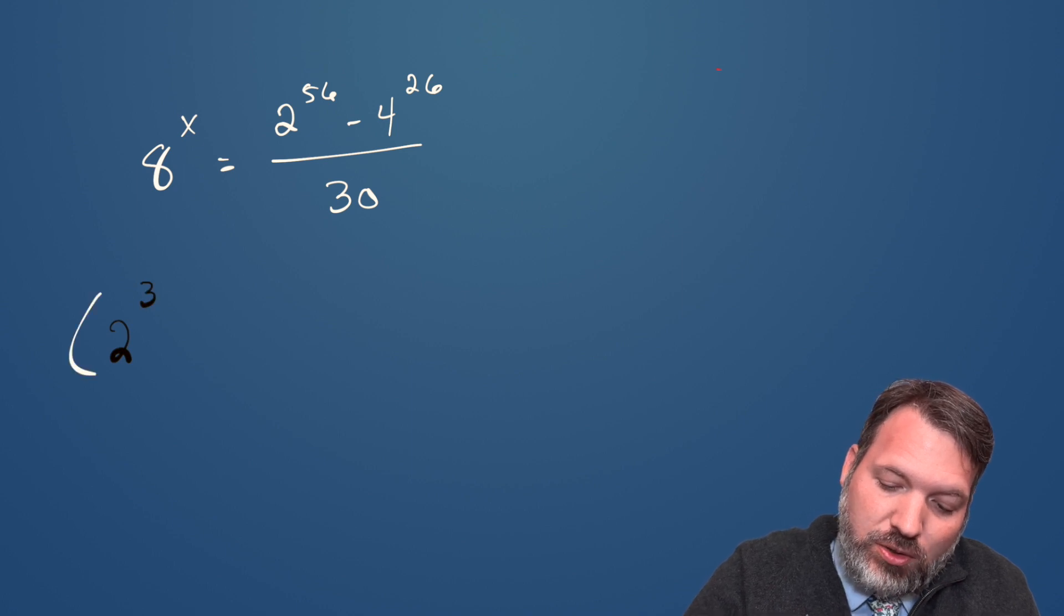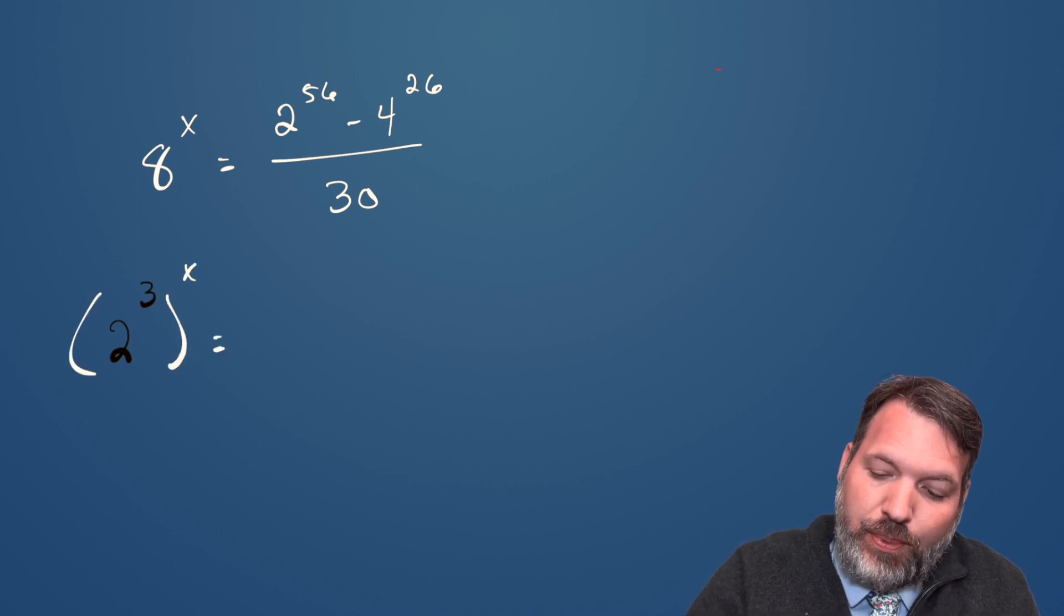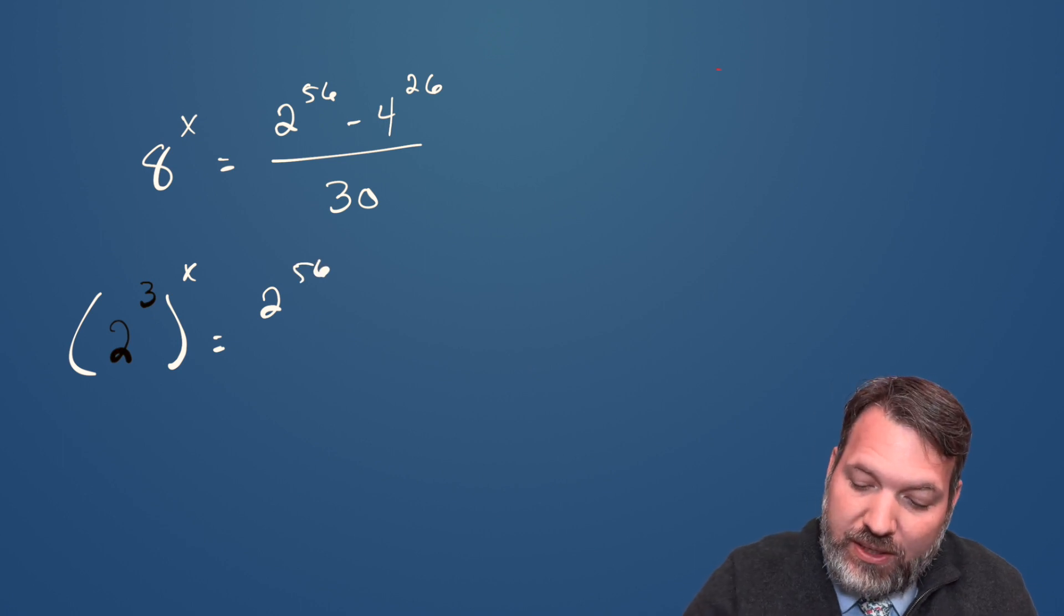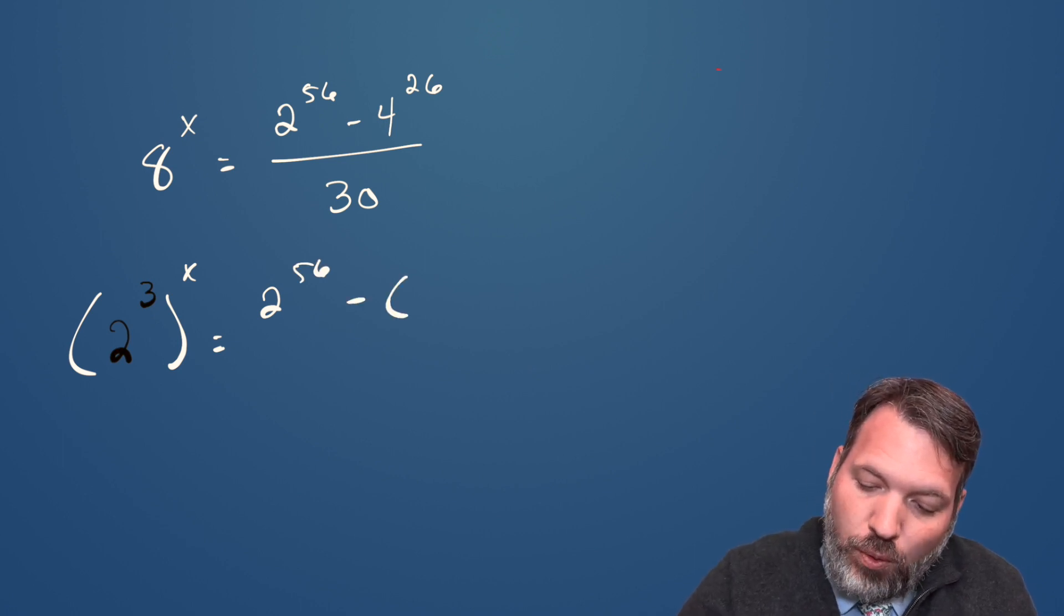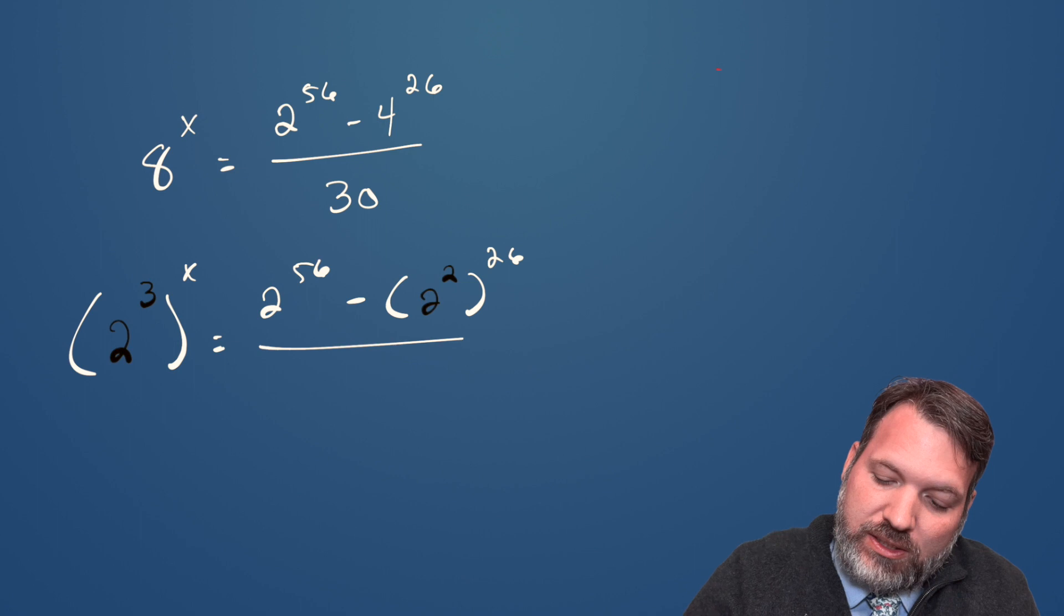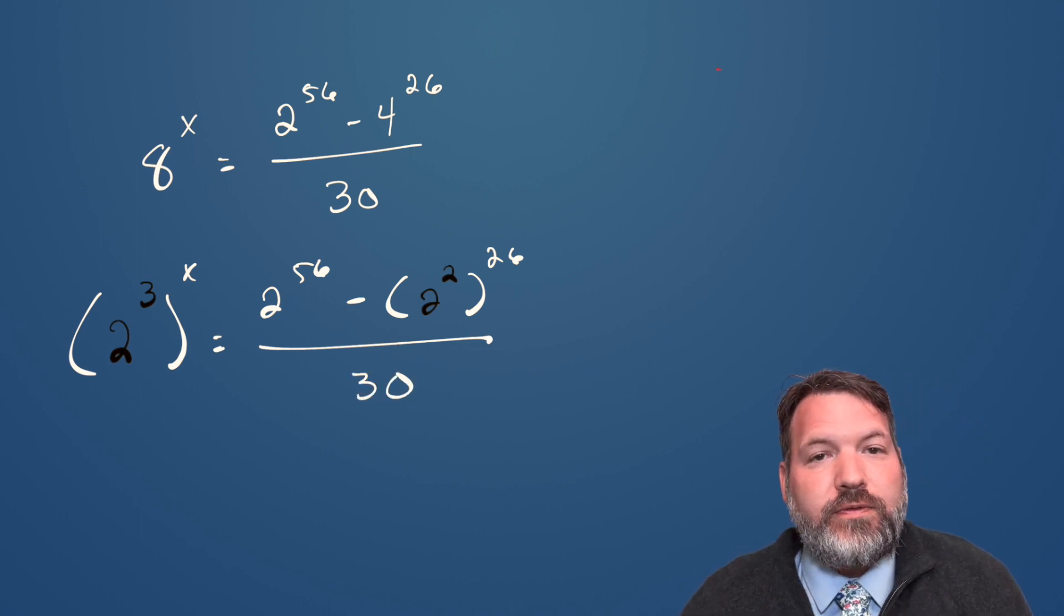So I'm going to write this instead as 2 to the 3rd to the x power. 2 to the 56th is already good. It's in terms of a base 2 already. But then 4, we're going to write as 2 squared instead. And so that becomes 2 squared to the 26th power. And again, this whole thing is divided by 30.